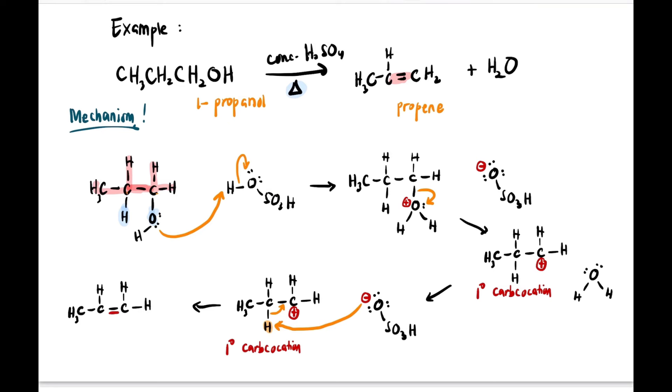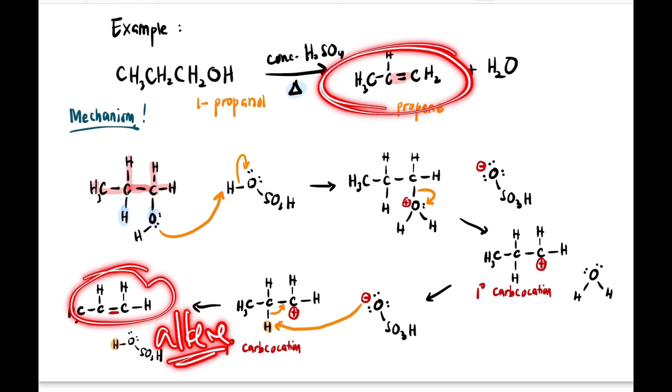Our HOSO3 will get back H, becoming HOSO3H again, like at the beginning. That's why it is only a catalyst in this reaction. H2O is our side product and alkene is our main product.